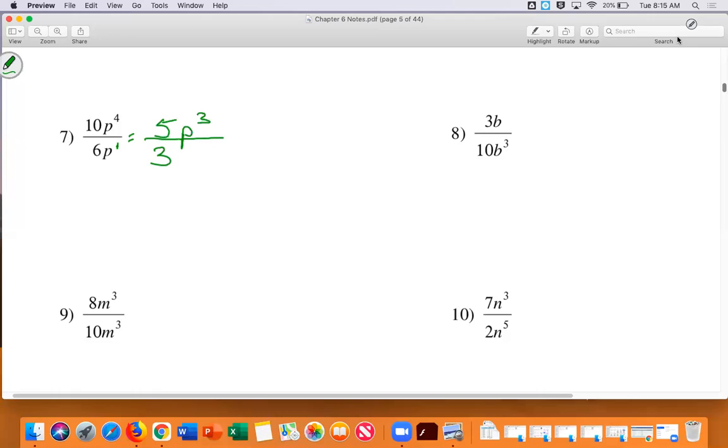Let's look at number eight. In number eight, three to ten. Destiny, do three to ten, like, simplify out? No. So I'm just going to write three over ten. But, Destiny, we have P to the first up top and P to the third down bottom. What are we going to do with the one and three? We're going to subtract. What's one minus three? Negative two. And since it's negative, it goes down bottom.